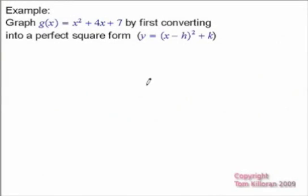This is an example of graphing a parabola in the perfect square form, but in this case we're going to have to force this trinomial to become a perfect square form. So we're going to complete the square on this, and we're only going to concentrate really on the first two terms.